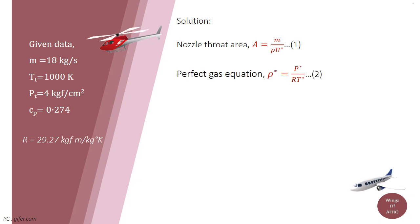First, find the density of the gas. We know that perfect gas equation, for an isentropic relation, rho star is equal to P star divided by R into T star.